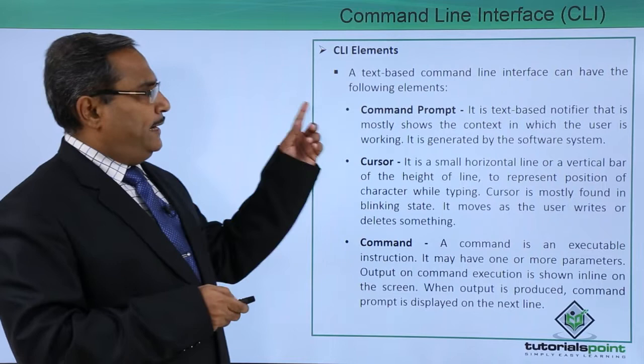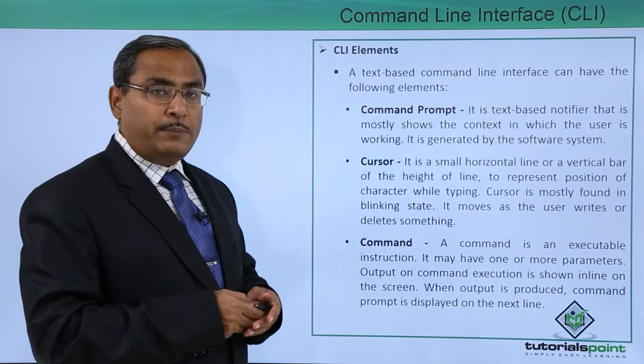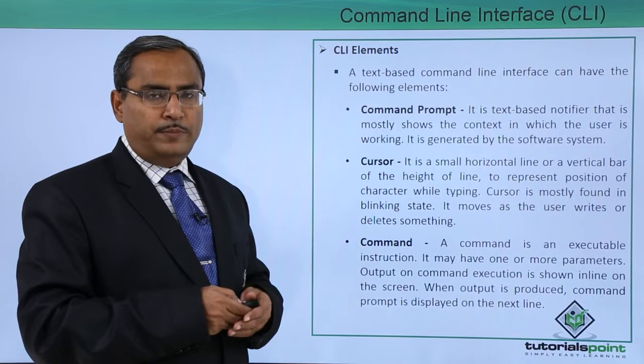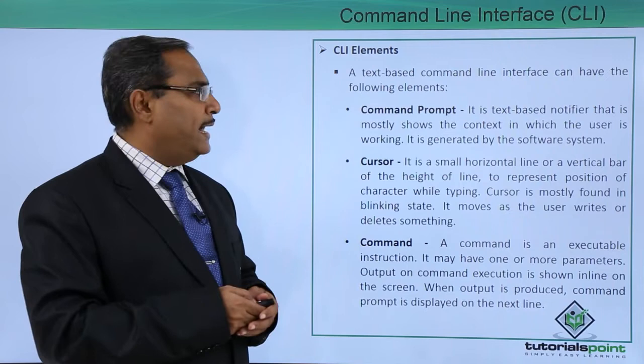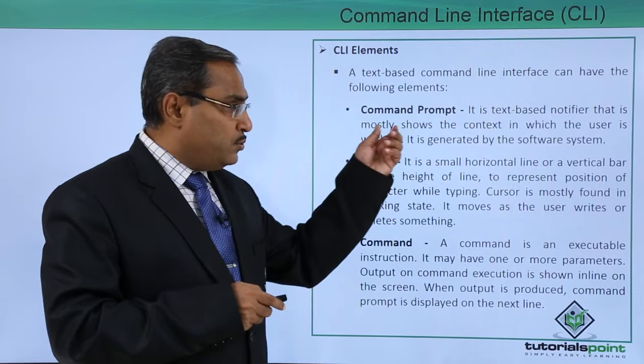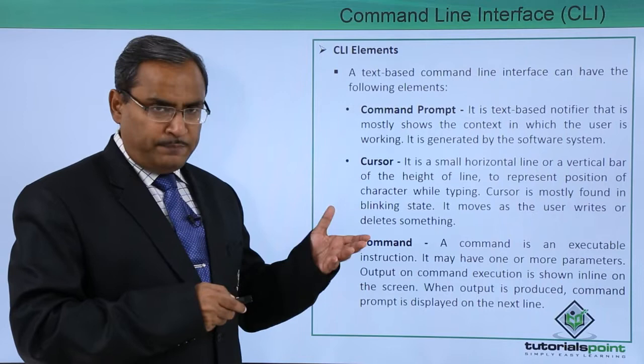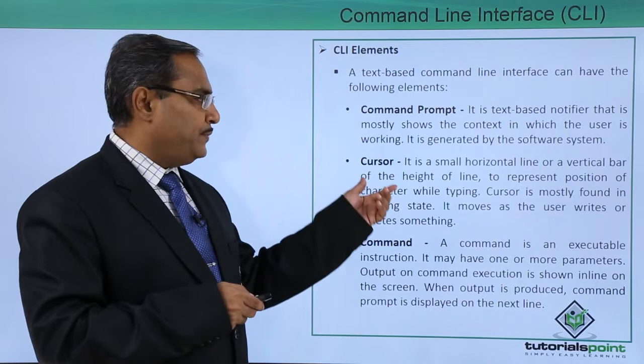Now let us consider the CLI elements. A text-based command line interface can have the following elements. First is the command prompt. In UNIX, if you log in as an ordinary user, the command prompt is the dollar sign. If you are the administrator or super user, the command prompt is the hash symbol. There is a default prompt, but you can change it. It is a text-based notifier that mostly shows the context in which the user is working, and it is generated by the system software.